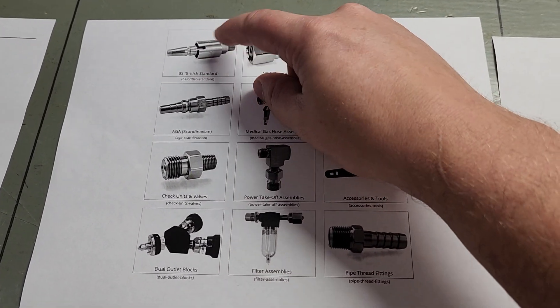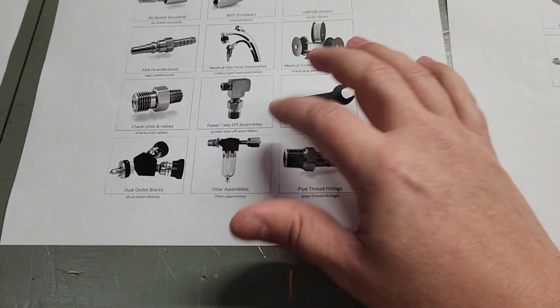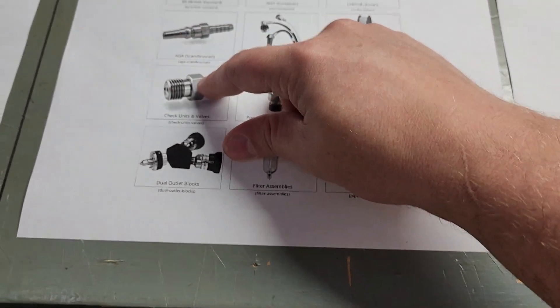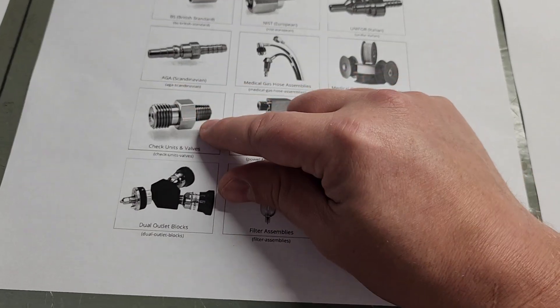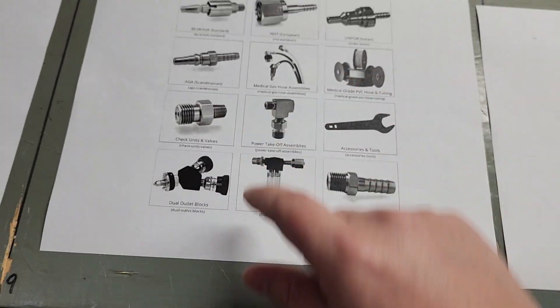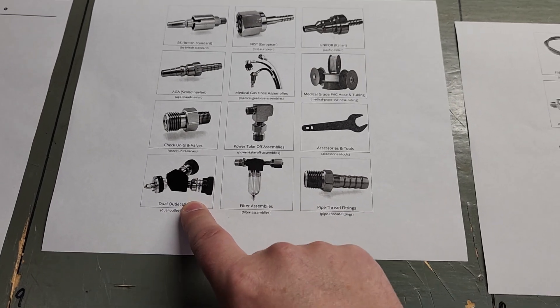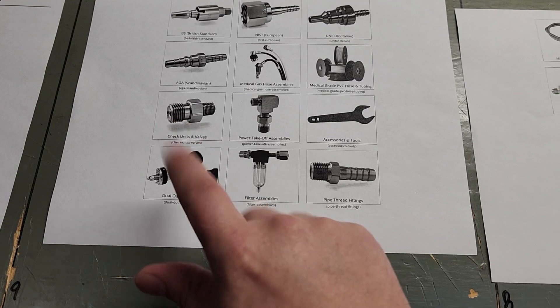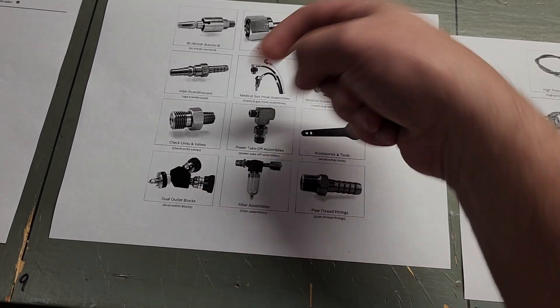DIN, haven't seen any of those. Ninety-degree swivels—that's an option. So when you get to nitrogen, then you start seeing stuff like this BS, the British standard. There are whole different types of connections you can get. Quick connects, check valve units—instead of getting a loud blast of air when you disconnect something, check valves. We can put check valves in your hoses. Dual outlet blocks.